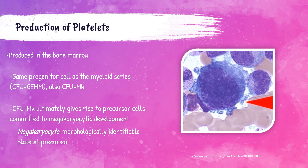Just like red blood cells and white blood cells, platelets are created in the patient's bone marrow. They have the same progenitor cell, CFU-GEMM, as the myeloid series. Platelets also have CFU-MK, which ultimately gives rise to precursor cells that become megakaryocytes. The megakaryocyte is the first morphologically identifiable precursor to the platelet. It's a very large cell with a multi-lobed nucleus, and you can see the platelets pinching off of the megakaryocyte — each megakaryocyte producing thousands of platelets.